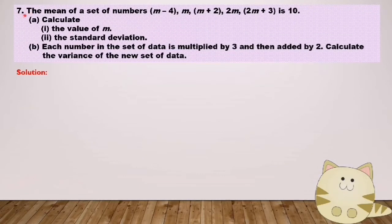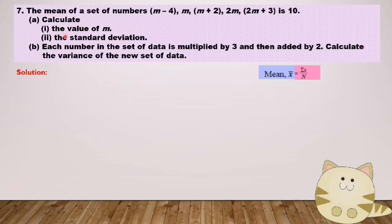Question number 7. The mean of a set of numbers: m minus 4, m, m plus 2, 2m, 2m plus 3 is 10. Calculate the value of m.